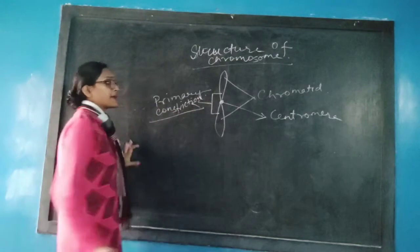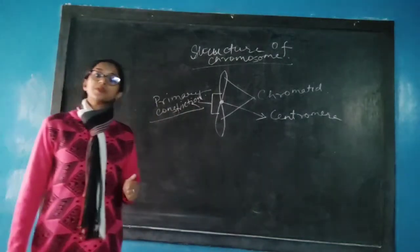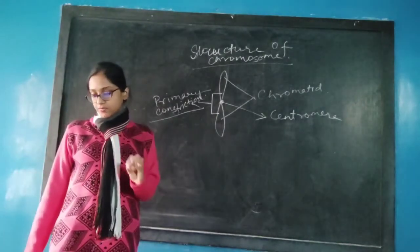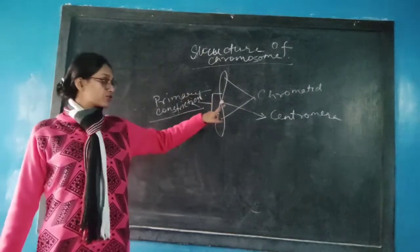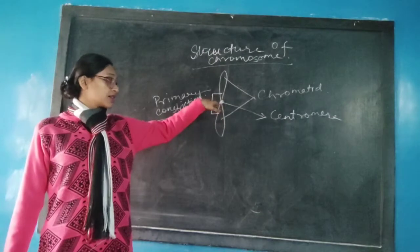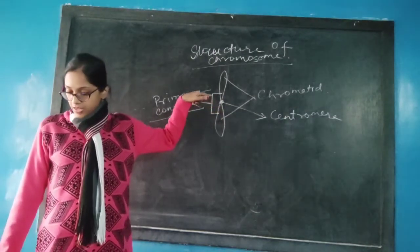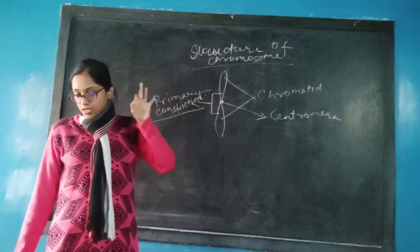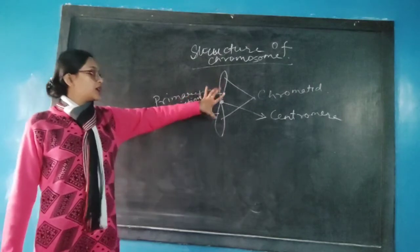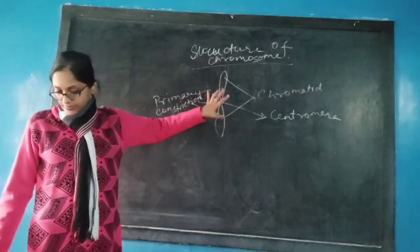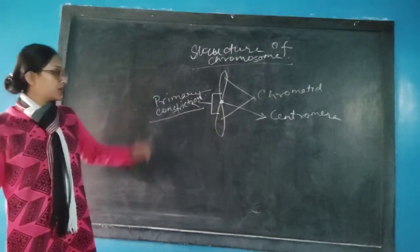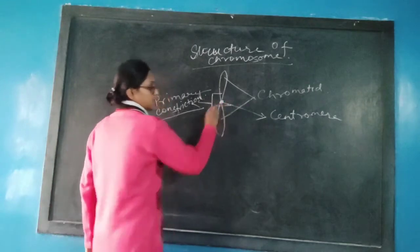Next, we are going for the primary constriction. What is primary constriction? It is a constrictive region of the chromosome which contains the centromere. This primary constriction divides the chromosome into two arms. The function of primary constriction is that it holds the centromere.